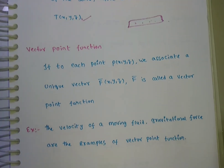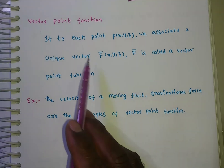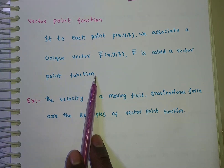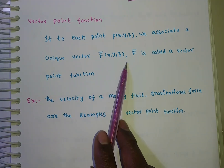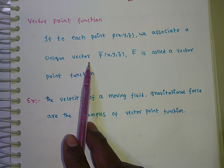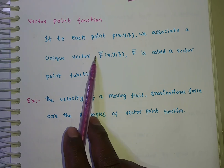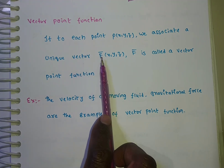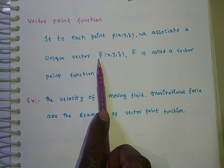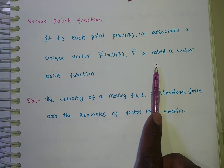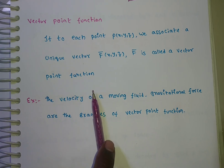Now, coming to the vector point function: if to each point phi of (x, y, z) we associate a unique vector f-bar of (x, y, z), this is called a vector point function. Note: unique real number means phi of x, y, z — that is the scalar point function. Unique vector means f-bar of x, y, z. If there is no bar, it is a scalar point function; if bar is there, f-bar of x, y, z is called a vector point function.